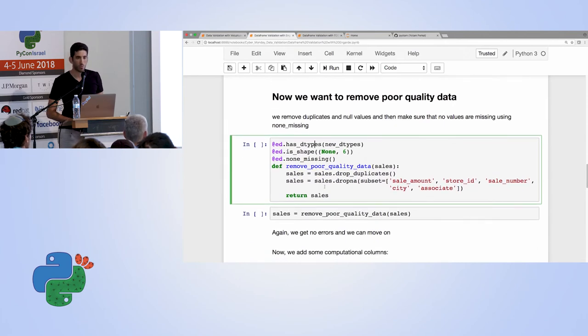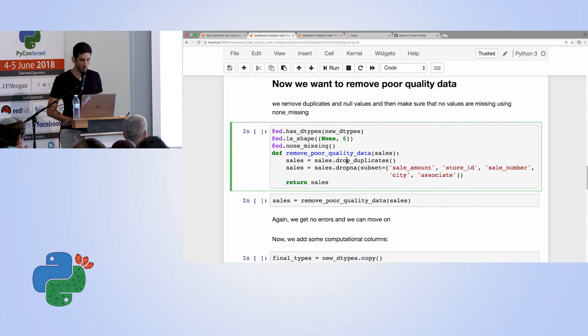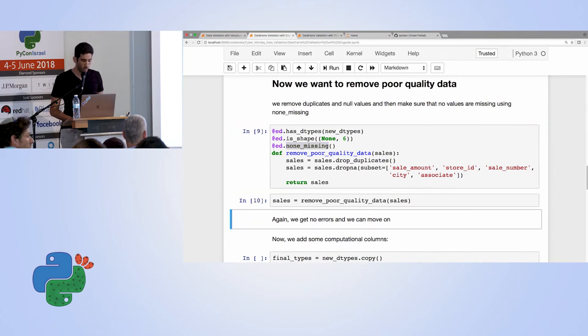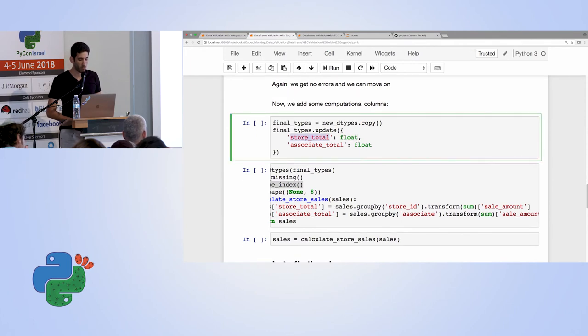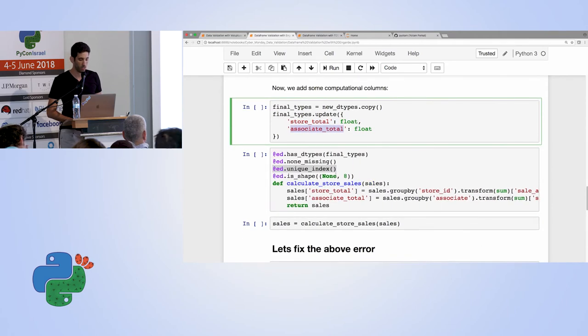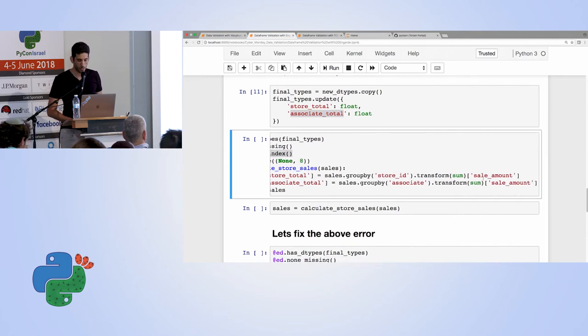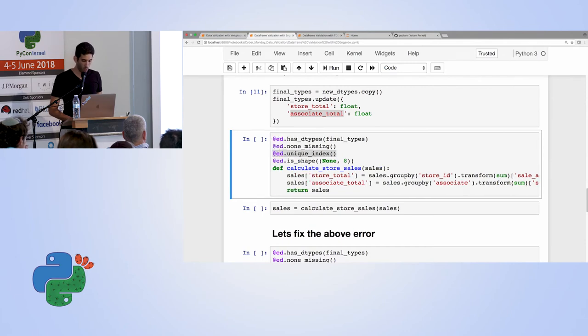And now let's say that we want to remove some poor quality data. So I'm removing duplicates and dropping any null values. And again, I have some kind of test to make sure that after I perform this action, I get no values that are still missing. And again, we run it and we see that we get no assertion. Okay, so now let's say that we want to add some computational columns. So I want to extend my data frame and add the store total and associate total columns, which basically is a group by store ID and by associate and I perform a summation.